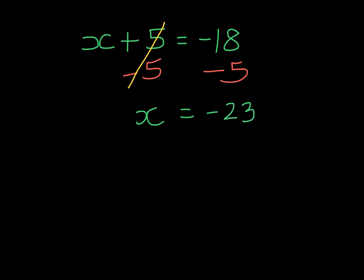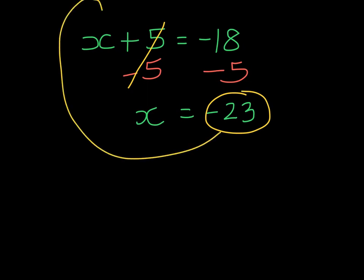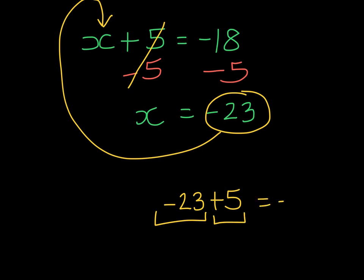At this point I can take the solution, substitute it into the original equation and check: negative 23 plus 5. If I owe 23 and have 5, do I still owe 18? Yes I do, so we've solved it correctly.